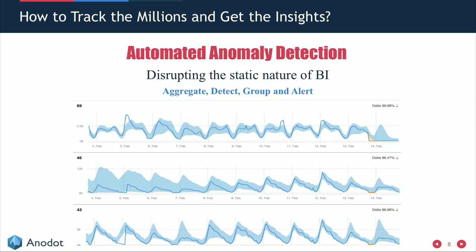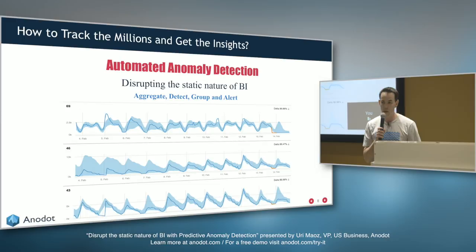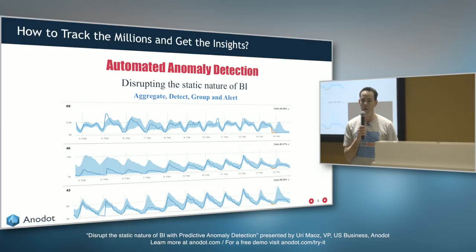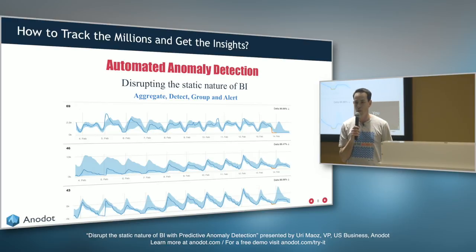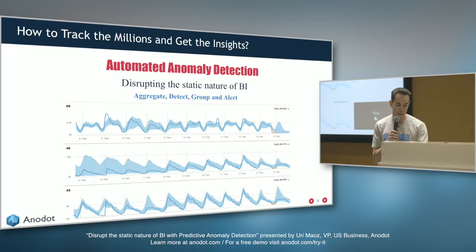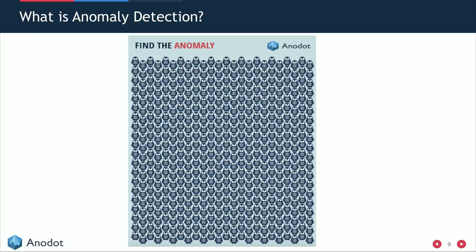This is why current BI tools don't give you the ability to get real-time business incident detection. But how do you get that? The answer — using automated anomaly detection.